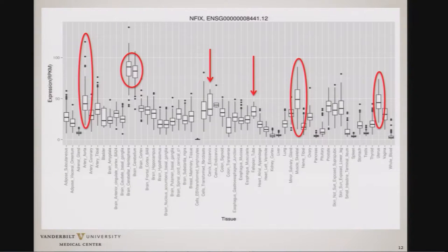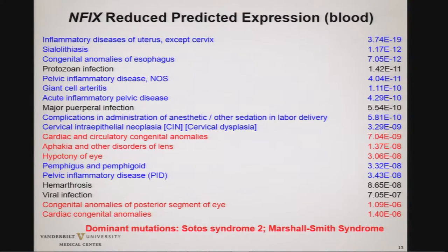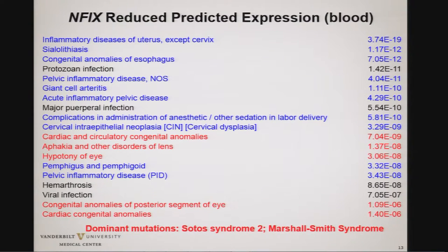It turns out to be highly expressed in uterus and cervix. So what do we see across BioVU? With reduced predicted expression just in blood, you see highly significant associations with pelvic inflammatory disease — a number of different diagnoses of that. In red are some of the classic features associated with one or the other of the syndromes. This is just in blood, but there are a number of other phenotypes that are also associated.